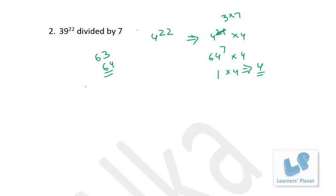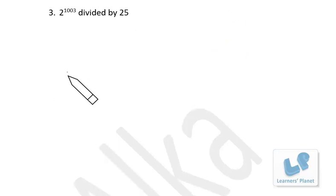Let me take more examples. The next one in the series: see this 2 raised to 1003 divided by 25. If you can think of 1024, that will be great because that's 2 raised to 10, and that is just one less than a multiple of 25.